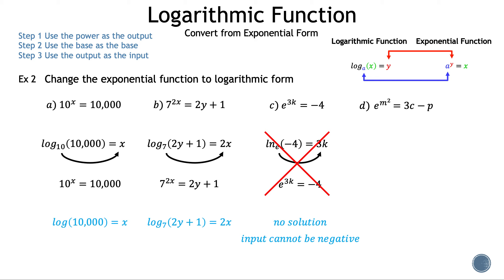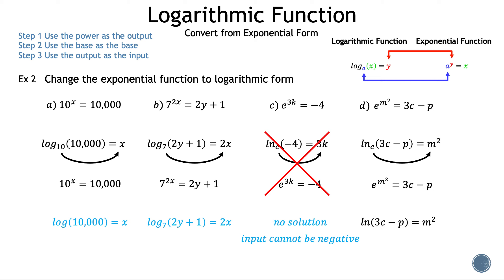Now let's move on to d: e raised to the power of m squared is equal to 3c minus p. The base remains the same — in this case, e. And our power, m squared, is the new output. Now we can place in the last variable we haven't used, 3c minus p. Let's verify by drawing the arrow from the base to the output and setting that equal to the input. We have our given, so the natural log form is correct. Remember, we don't need to write down the base since it is e.